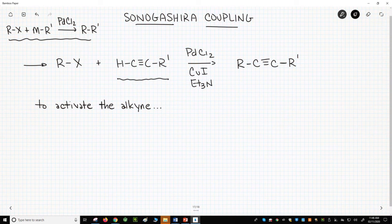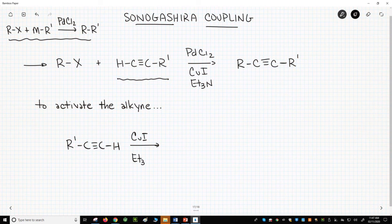In the Sonogashira reaction, the alkyne, and it's always a terminal alkyne with a CH, interacts with a salt, a copper salt like copper iodide, and a base, which is often triethylamine.